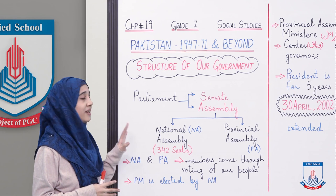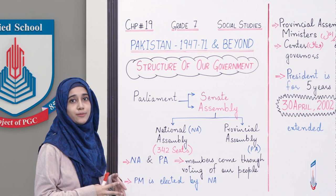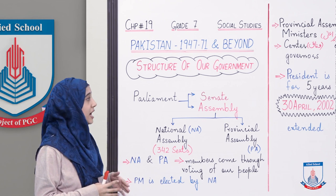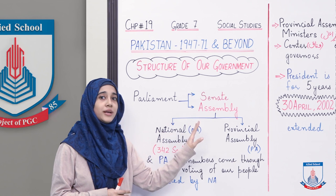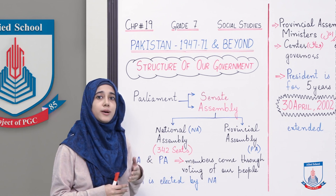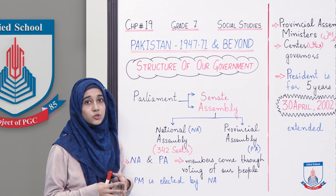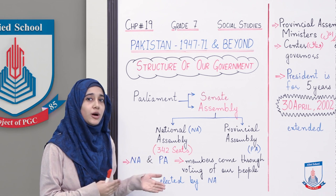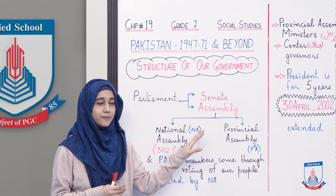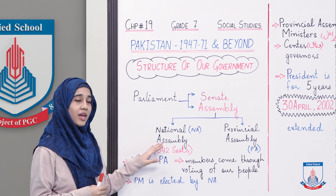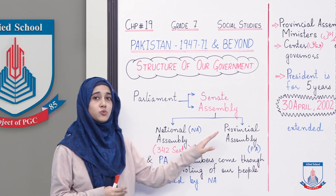Toh humari government mein there is a parliament, yaani ke parliamentary jamuori nizam chalta hai humare mulk mein — parliamentary democracy. Ab parliament ke aage se doh hisse hote hain: one is senate and the other one is assembly. Aapne aksar TV pe khabron mein bhi suna hoga assembly ka baar baar naam. Lekin kai baar ye structure humein samajh nahi aata. Ab assembly ke aage se doh parts hote hain: one is national assembly and the other one is provincial assembly, yaani ke qawmi assembly aur subhai assembly.